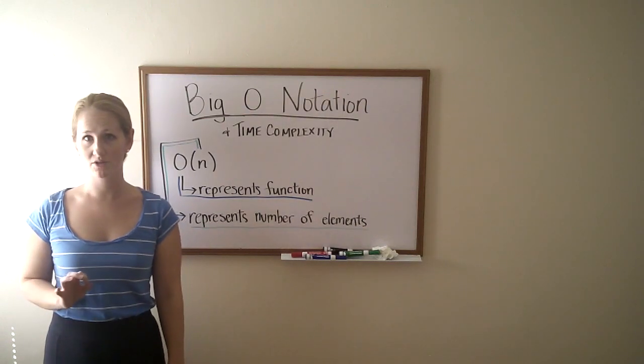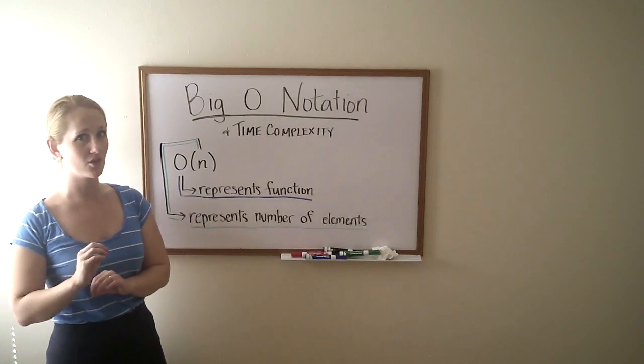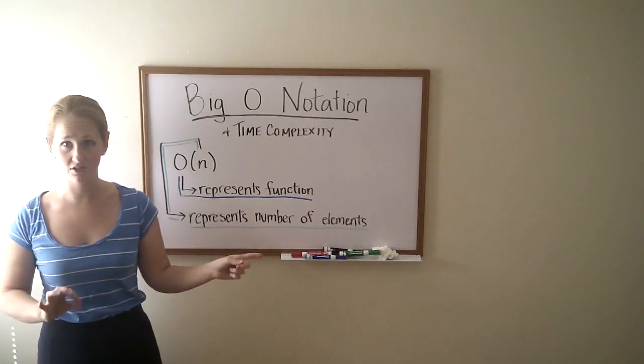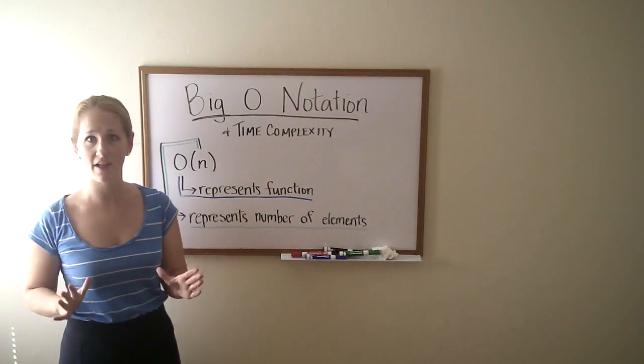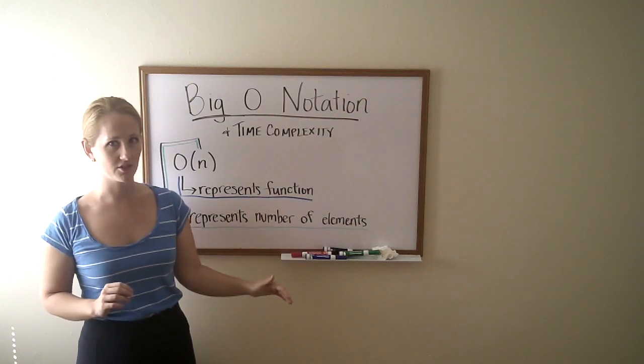Let's talk a little bit more about Big O notation and time complexity. Specifically, you're going to see Big O notation with the O, which represents the function that you're looking at, or the algorithm, whatever it is you're evaluating, and n, which represents the number of elements that are in that function.